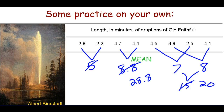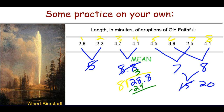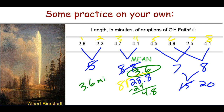We have 8 data points, so we divide 28.8 by 8. 8 goes into 28 three times, giving 24 with 4.8 remaining, and 6 times 8 is 48, which goes evenly. Our mean is 3.6 minutes.